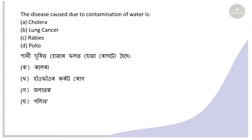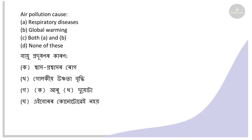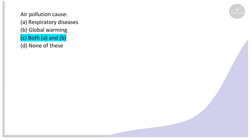Next: This disease is caused due to contamination of water — the right answer is cholera and typhoid. Next: Air pollution causes what? Options: respiratory disease, global warming, both A and B, none of these. The right answer is both — air pollution causes respiratory problems and global warming.